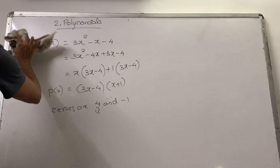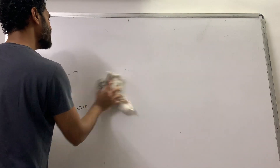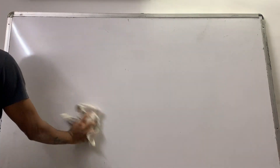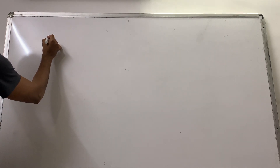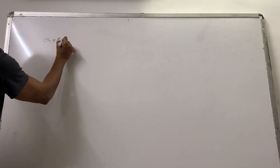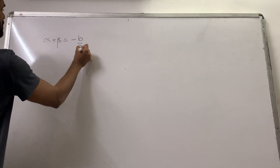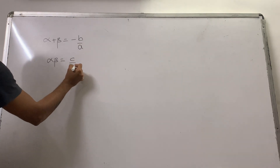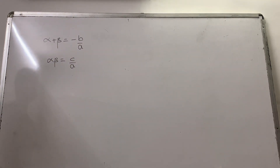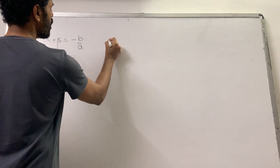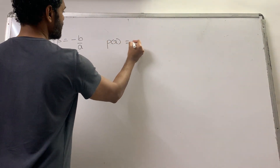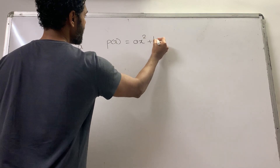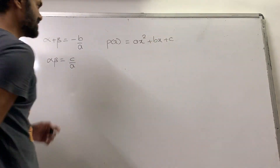That was Exercise 2.2, question 1. Now we take question 2. Let us understand the concept behind question 2. We know that sum of zeros α + β = −b/a, and product of zeros α × β = c/a. The general form of a quadratic polynomial is ax² + bx + c.